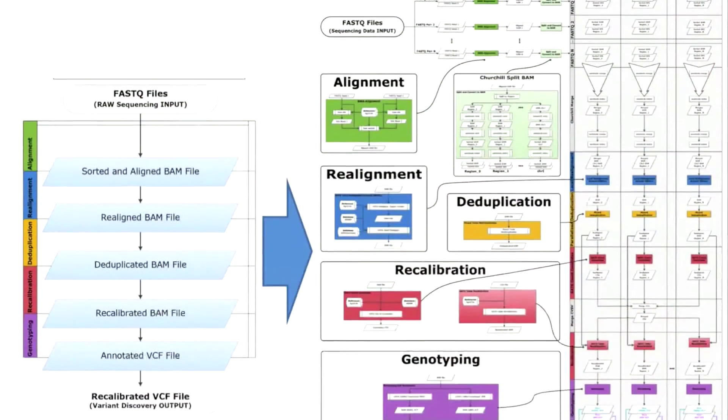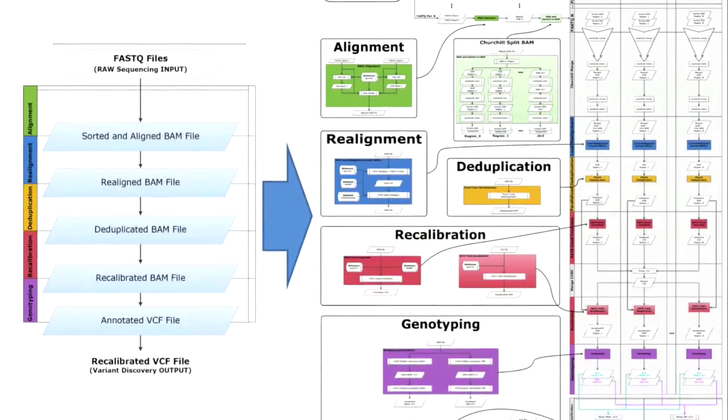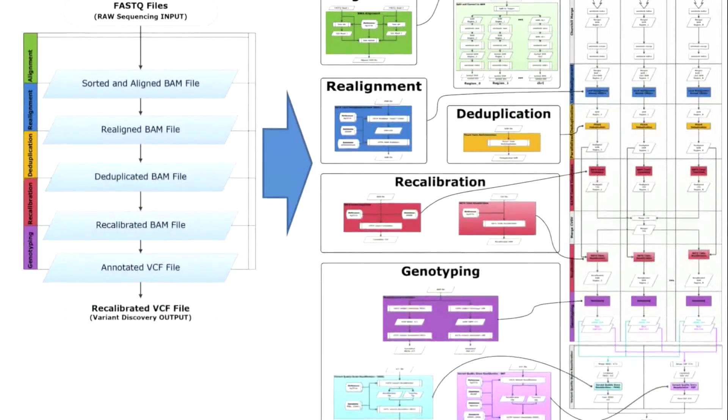What Churchill did is it looked at the computational steps that are involved to go from that 300 base pair raw sequence read and to piece that back together into the genome and then find the genetic variants. And worked out how to efficiently distribute them across multiple computers.